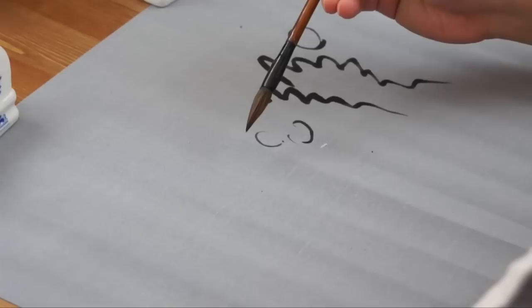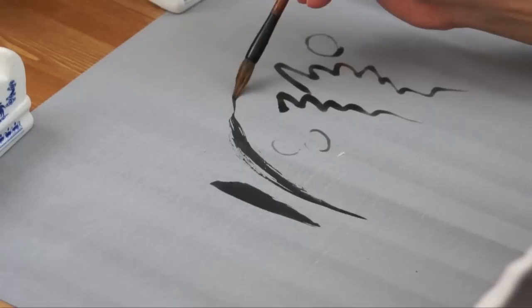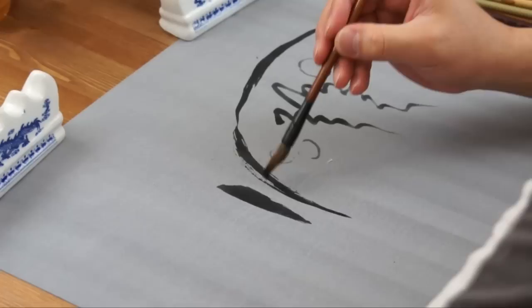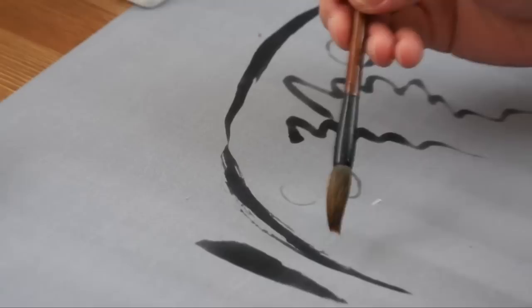The second one is a small size bamboo and orchid brush. It is very versatile. You can do, as the name suggests, the leaves of bamboo or the blades of orchid. You see the nice flying white, Fibai in Chinese, the bristle in the stroke.